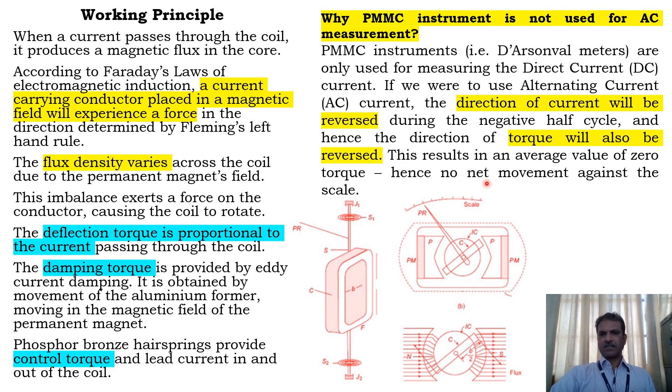When we see the net movement, the average value becomes zero, the torque value becomes zero, so there is no movement. So that is the reason why PMMC instruments are not used for AC measurements.